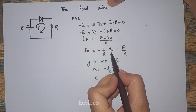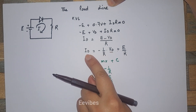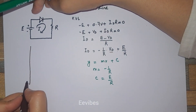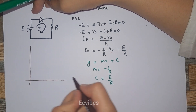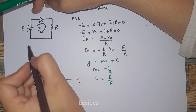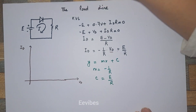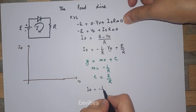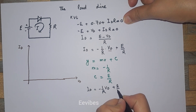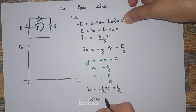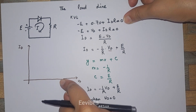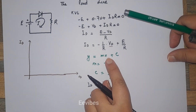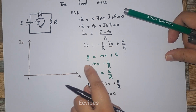On the graph, VD is the independent variable while ID is the dependent variable. VD is shown on the X-axis while ID is shown on the Y-axis. To plot this straight line equation, you need to find the intercepts on each axis. The procedure is: first make X equal to zero and find Y, then make Y equal to zero and find X.